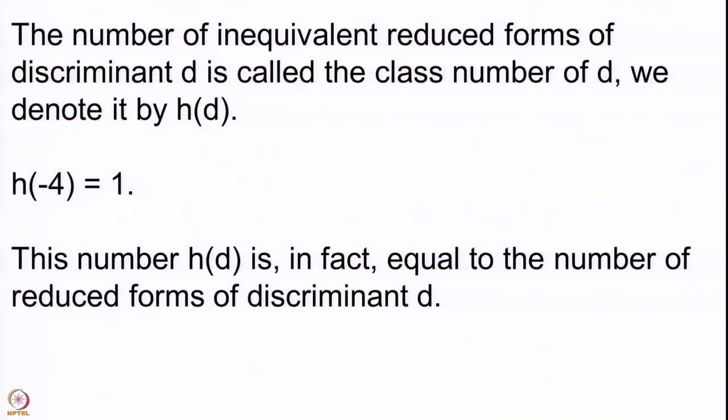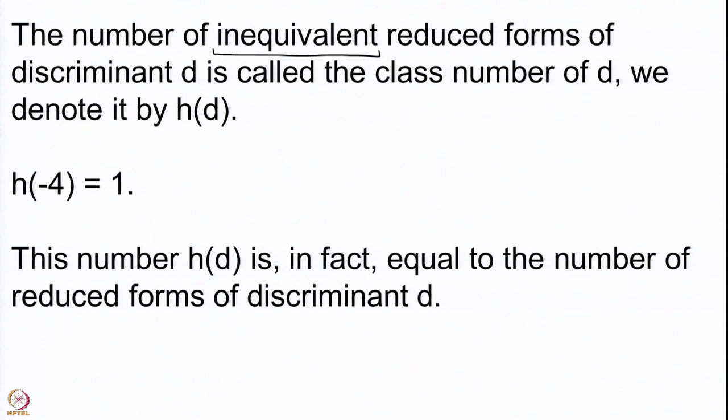That is a very good result — h(−4) = 1 — and this is something we will also use in further lectures. Now we come to the next observation: h(d) is in fact equal to the number of reduced forms of discriminant d, which means the phrase 'inequivalent' is redundant. If there are two reduced forms which are equivalent, then they have to be the same. Different reduced forms cannot be equivalent to each other. This is the next theorem we are going to prove, but first there are some intermediate lemmas we will need.